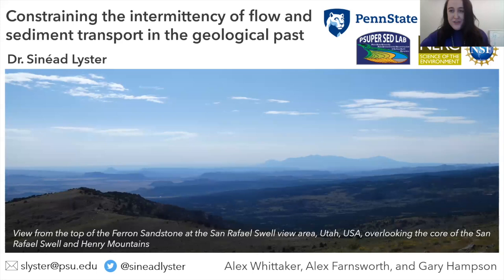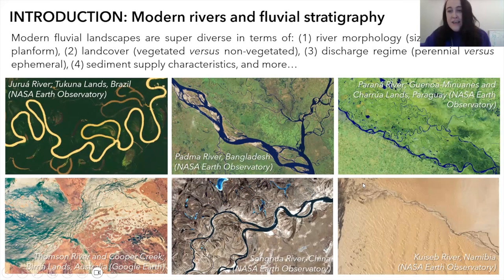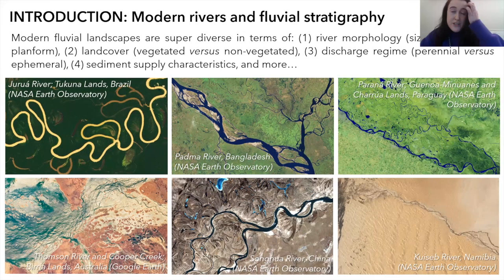Thank you for the introduction. Today I'm going to talk about constraining flow and sediment transport in the geological past. My research is focused on deciphering the stratigraphic record of rivers, and to do this it's important that we first acknowledge the diverse nature of modern rivers. As you can see, modern rivers have super diverse morphologies — they vary in size, aspect ratio (width-to-depth ratio), and planform morphology, describing whether rivers are single-thread or multi-thread.